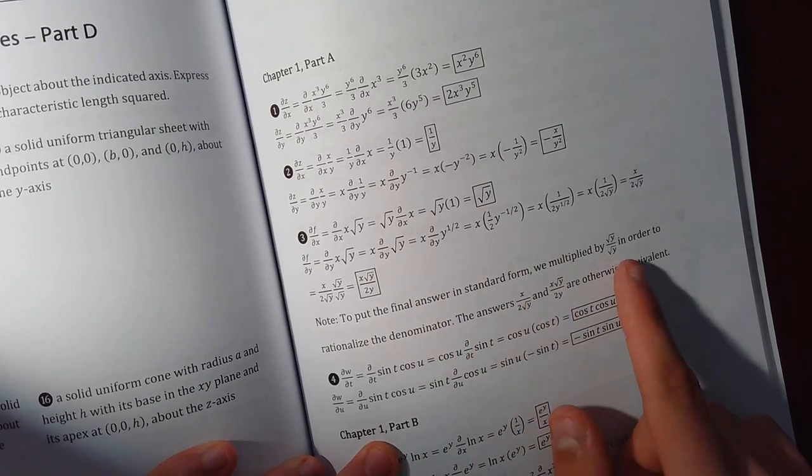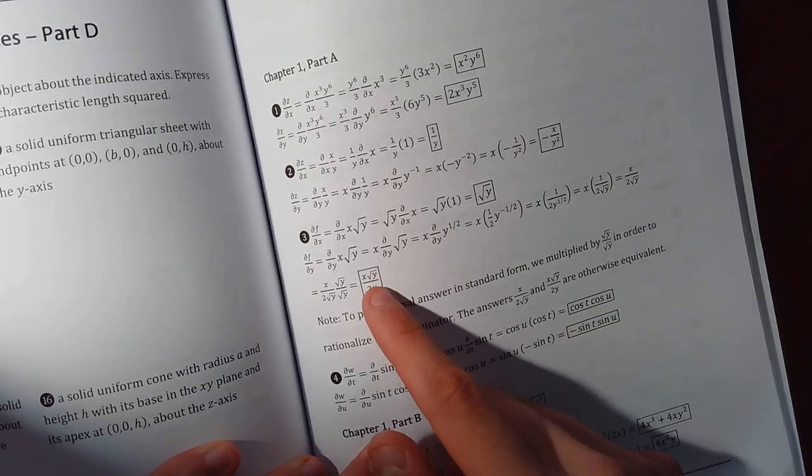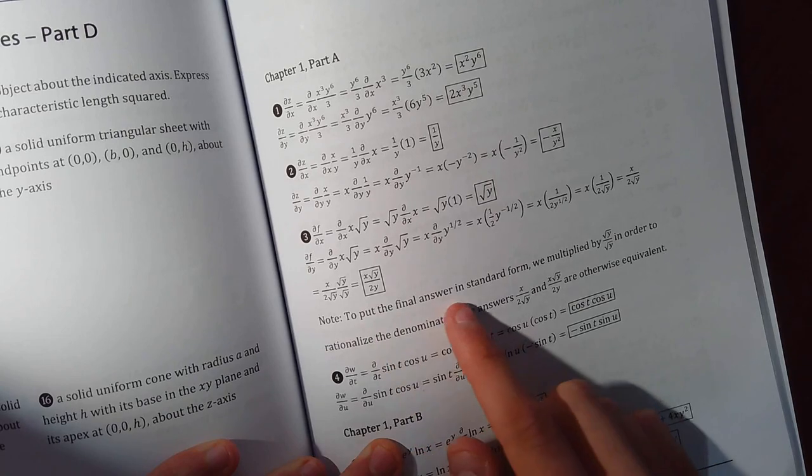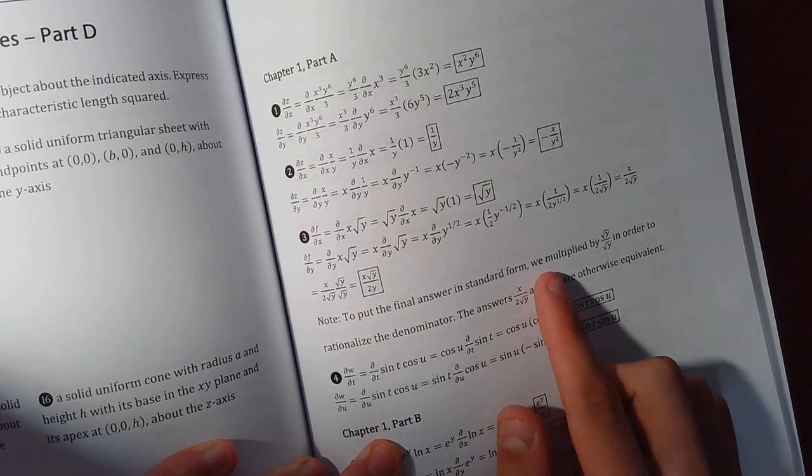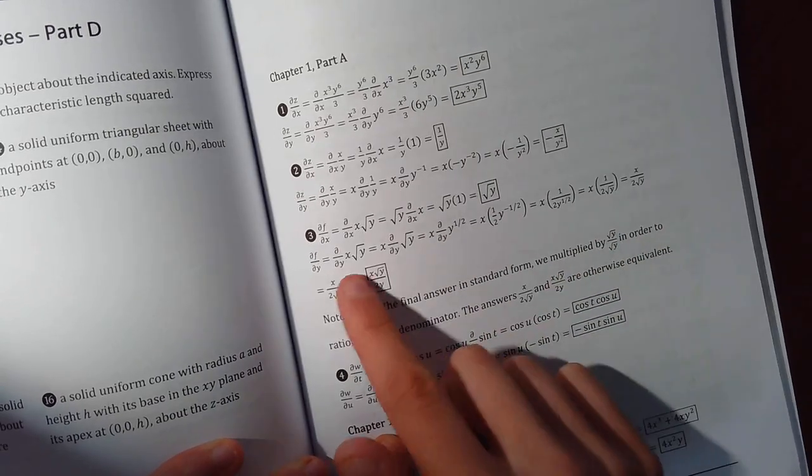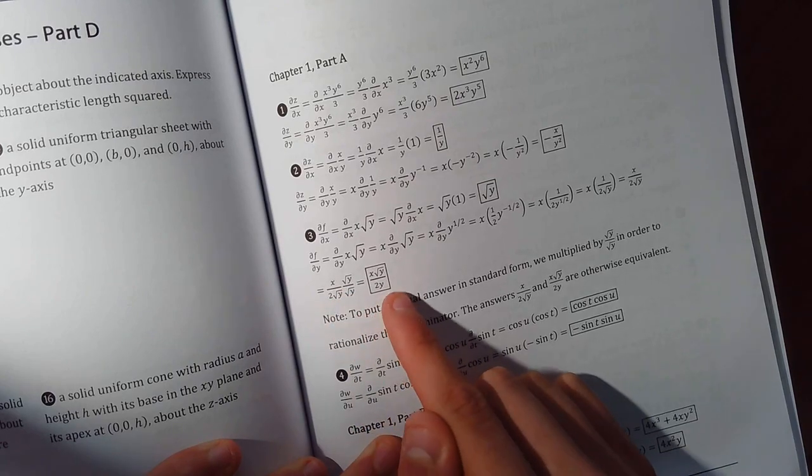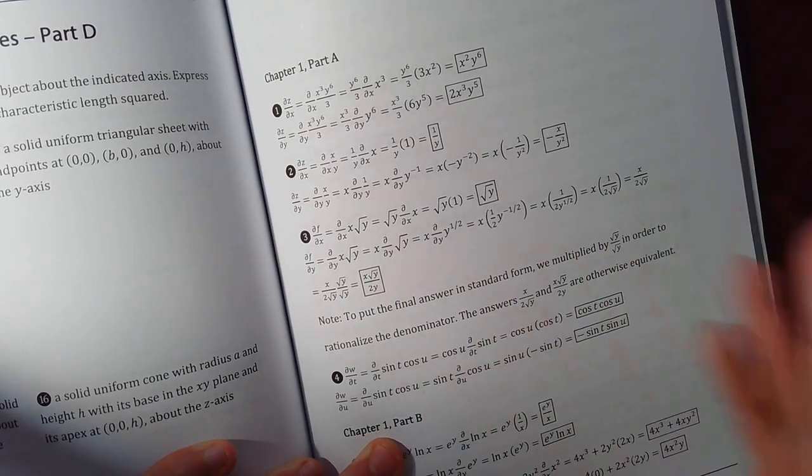It's also got some explanations like why they put it like this. So note, to put in the final answer in standard form, we multiply by that. That answer is correct, but they're telling you why they put it like this. Just put it in standard form.